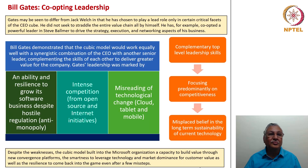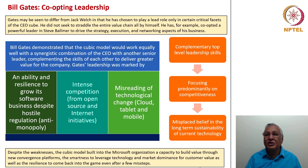Gates may be seen to differ from Jack Welch in that he chose to play a lead role only in certain critical facets of the CEO cube. He did not seek to straddle the entire value chain by himself — he co-opted a powerful leader in Steve Ballmer to drive the strategy execution and networking aspects of his business. He demonstrated that the cubic model works equally well with a synergistic combination of the CEO with another senior leader complementing each other's skills to deliver greater value.